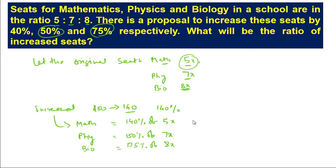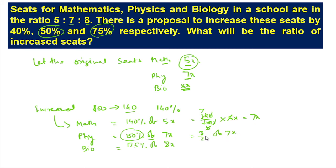Now solving: 140% means 140 divided by 100 multiplied by 5x. Cancelling zeros and then by 2, we get 7, and 5 and 5 cancel, giving 7x. For Physics, 150% means 3 by 2. If we see the previous videos on percentages, 150% directly equals 3 by 2, so 3/2 of 7x gives 21x divided by 2. For Biology, 175% means 7 divided by 4, so 7/4 multiplied by 8x. Since 8 divided by 4 is 2, we get 14x.